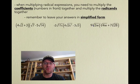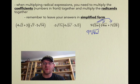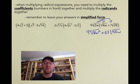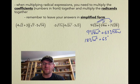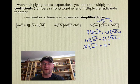Our last multiplication example is 9∛(2w) times (∛(4w) + 7∛28). Using the distributive property, we get 9∛(8w²) + 63∛(56w). The cube root of 8 is 2, giving us 18∛(w²). For the second term, 56 equals 8 times 7w, and taking the cube root of 8 gives 2, so 2 times 63 is 126∛(7w). The final result is 18∛(w²) + 126∛(7w).